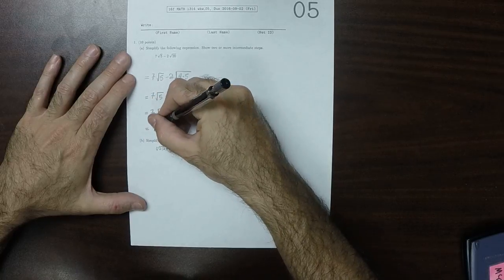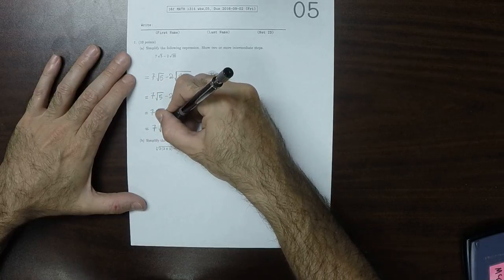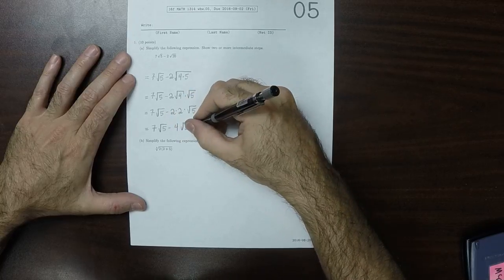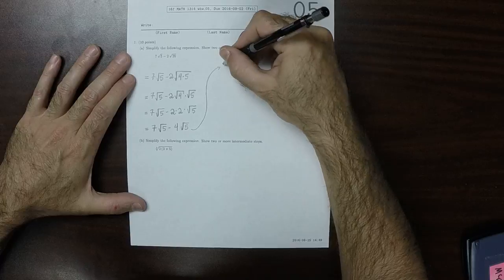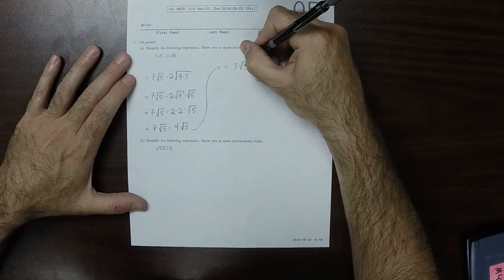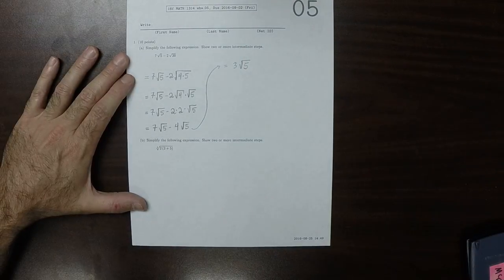So that would be 7 square root 5 minus 4 square root 5, which is 3 square root 5. So that's the answer to part A.